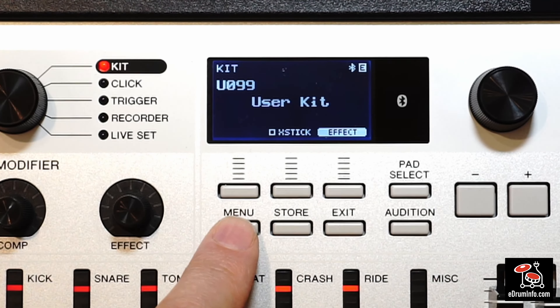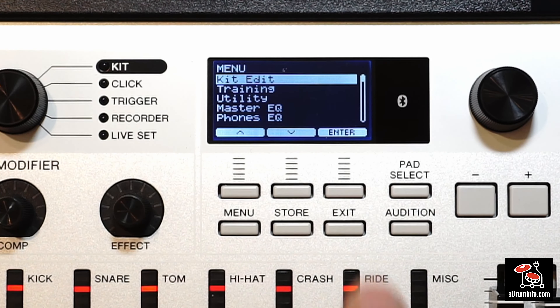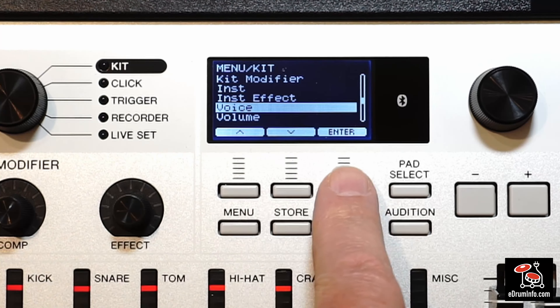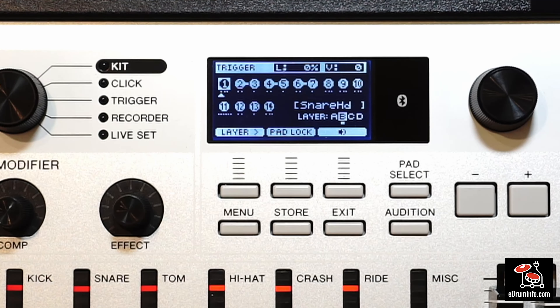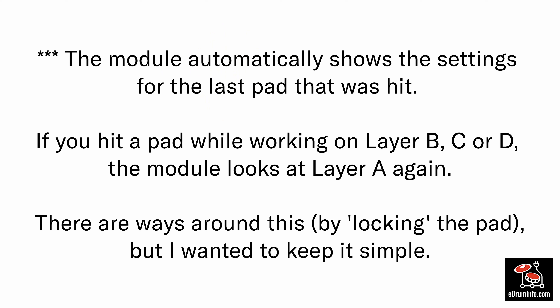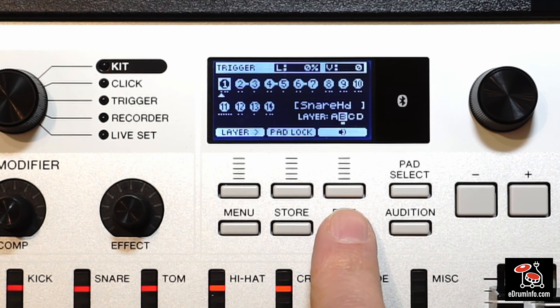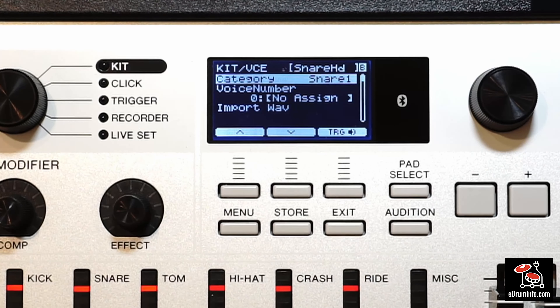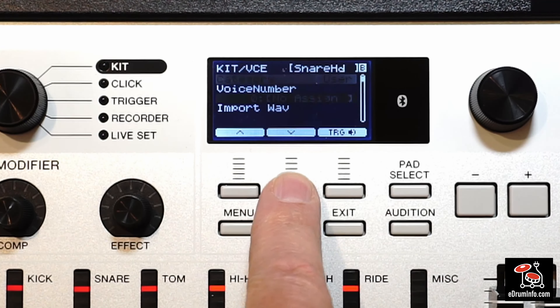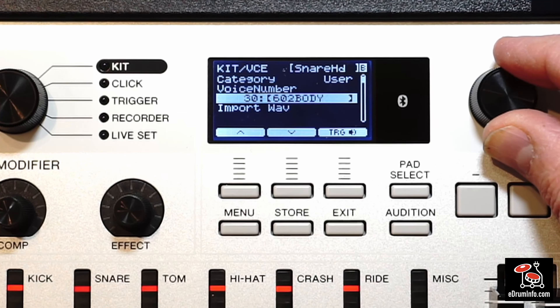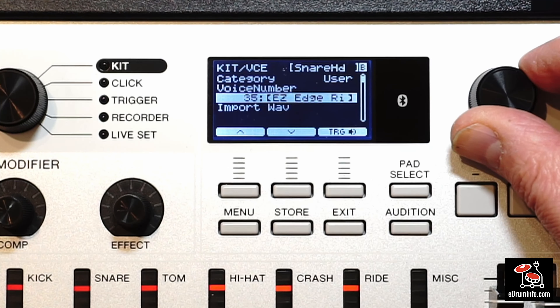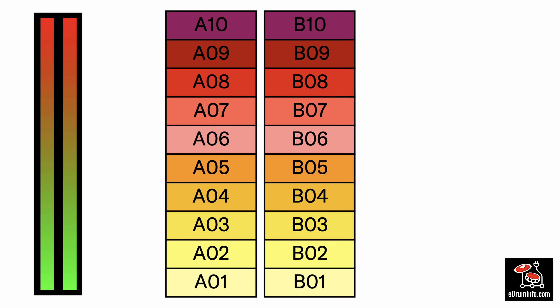So go to menu, kit edit, voice and hit the head. Now press TRG F3 and press layer F1 to select layer B without hitting the pad. Press exit, change category to user and voice number to where you have put your snare head user voice B voices. You have now added layer B, the second round robin or repeating sample onto your snare head.